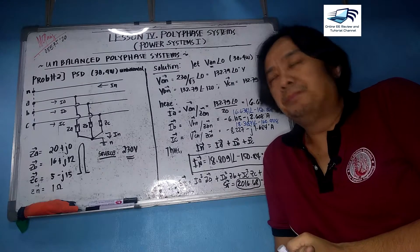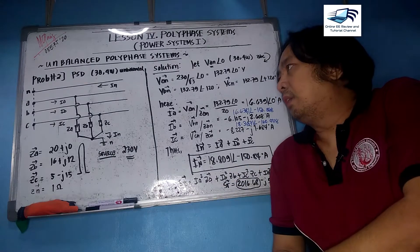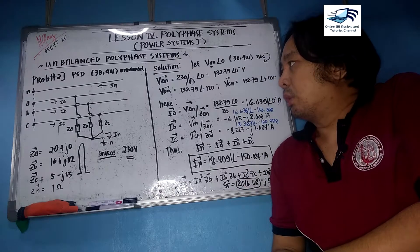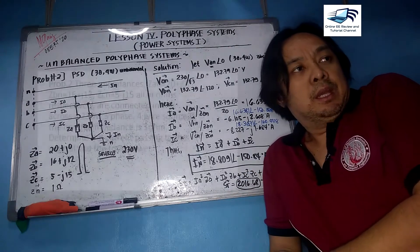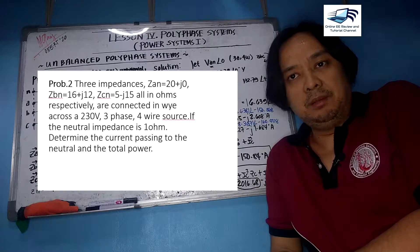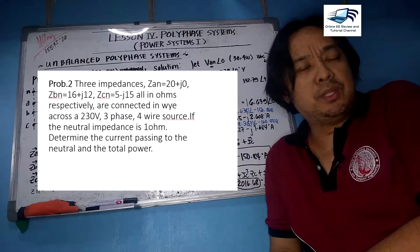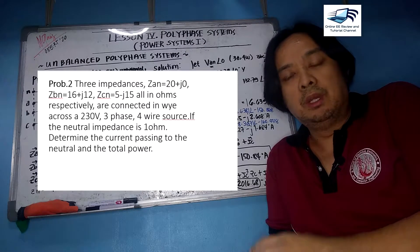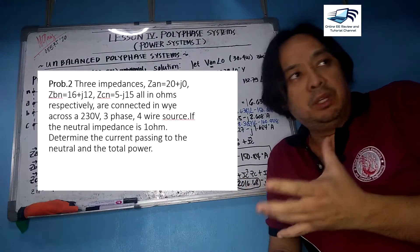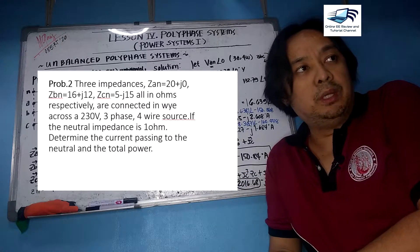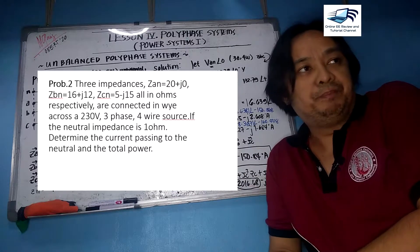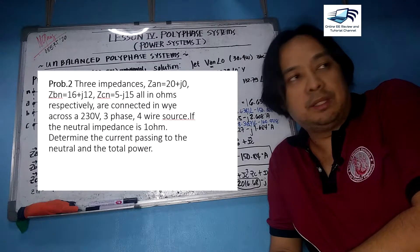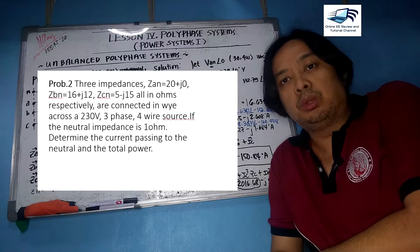Problem number two: three impedances — ZAN = 20+j0, ZBN = 16+j12 ohms, and ZCN = 5−j15 ohms — are connected in Y across a 230-volt three-phase four-wire source. The neutral impedance is 1 ohm. Determine the current through the neutral wire and the total power.